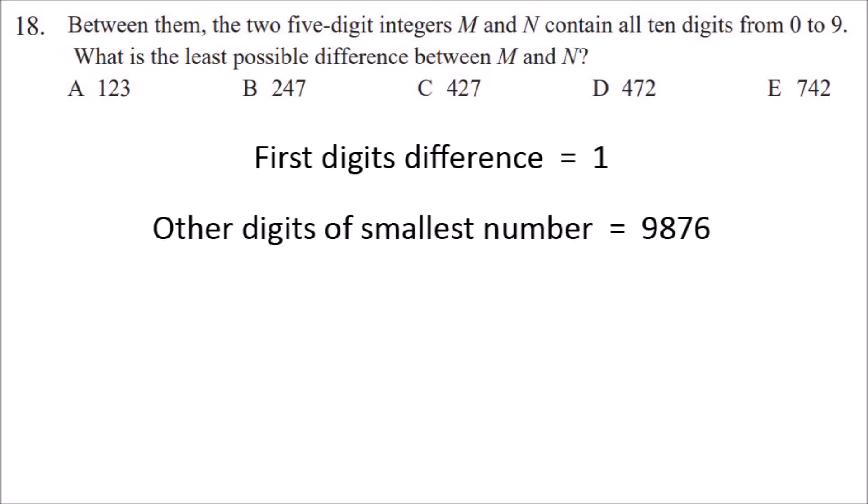The other four digits of the smallest integer would therefore have to be as big as possible and so that would be 9876, and the other four digits of the bigger integer would have to be as small as possible so that would be 0123.